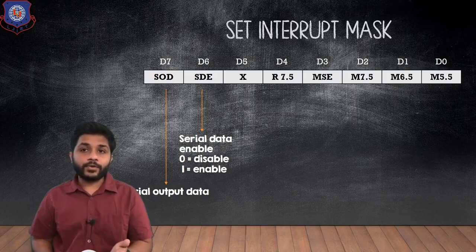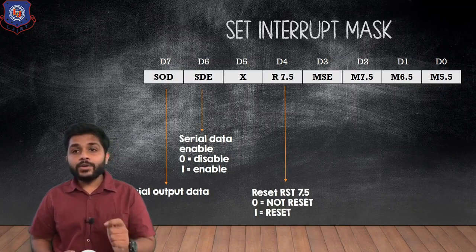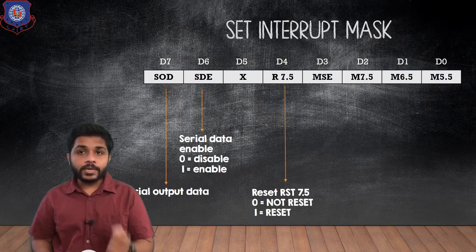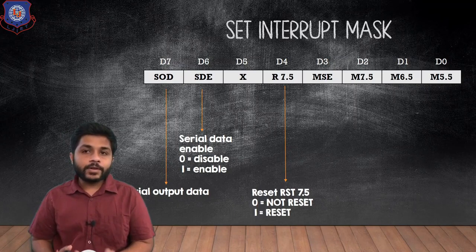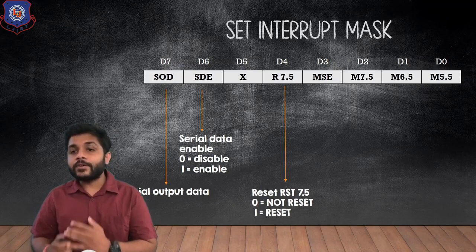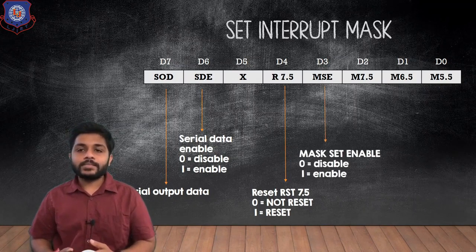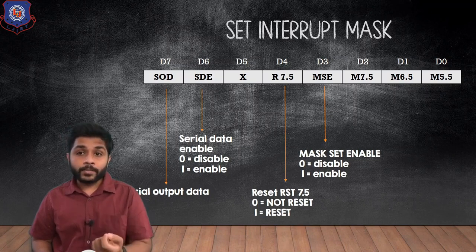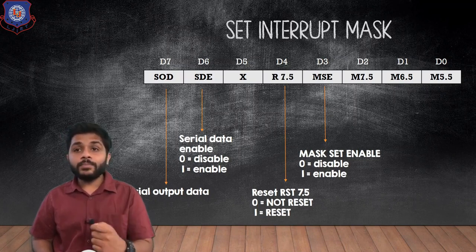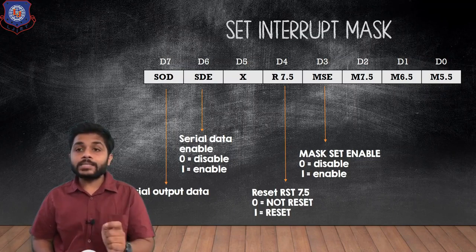The next bit is D4, which is for reset RST 7.5. When D4 is 0, the RST 7.5 interrupt is not reset, and when D4 is 1, the RST 7.5 interrupt is reset. The next bit is D3, which is mask set enable (MSE). If you want to mask some interrupts, the MSE must be set to 1. If MSE is 0, you cannot mask any interrupt — it is a pre-requirement for masking.